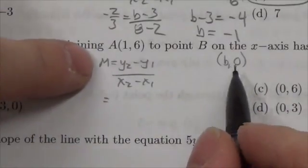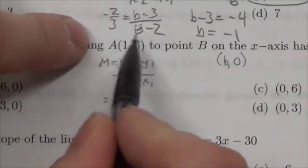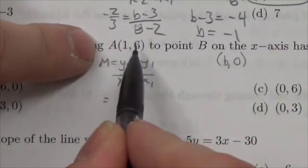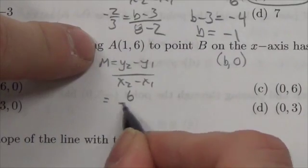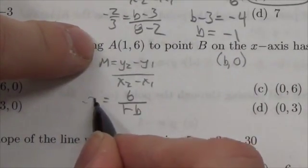In this case here, and actually maybe it makes more sense, it would be a little bit easier to do this way. Well let's say that this is our second point here, so it'll be 6 minus 0, which is 6, and then 1 minus B, and I know that it's going to have a slope of negative 3.